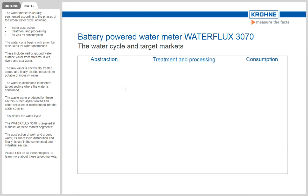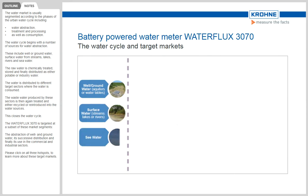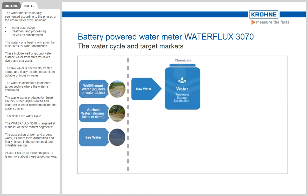The water cycle begins with a number of sources for water abstraction. These include well or ground water, surface water from streams, lakes, rivers, and seawater. The raw water is chemically treated, stored and finally distributed as either potable or industry water.